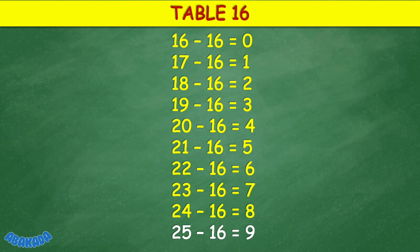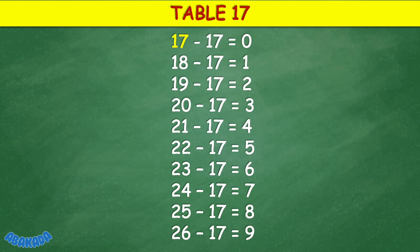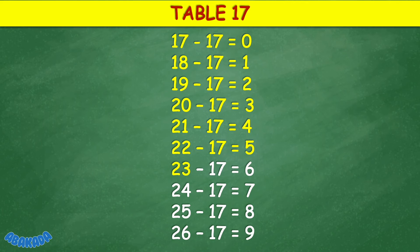Table 17: 17 minus 17 equals 0, 18 minus 17 equals 1, 19 minus 17 equals 2, 20 minus 17 equals 3, 21 minus 17 equals 4, 22 minus 17 equals 5, 23 minus 17 equals 6, 24 minus 17 equals 7, 25 minus 17 equals 8, 26 minus 17 equals 9.